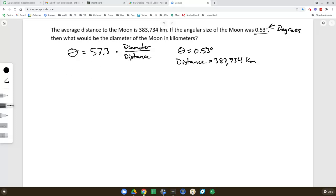To rearrange here, I'm going to divide both sides by 57.3. So I'll have theta over 57.3, and then that equals diameter over distance.